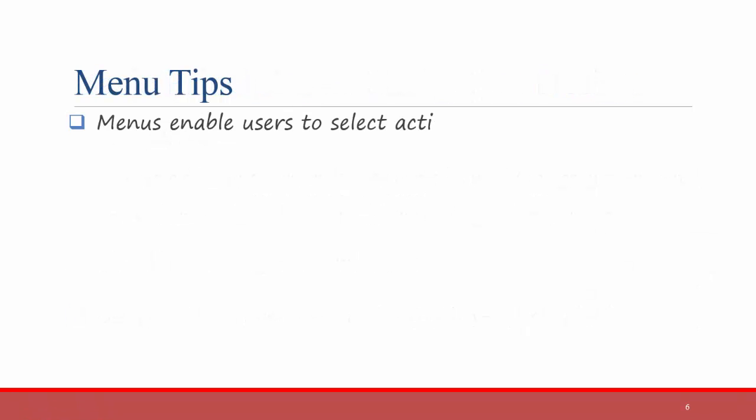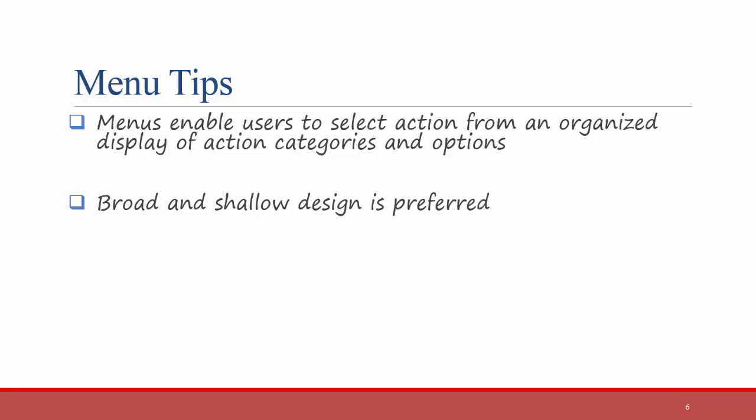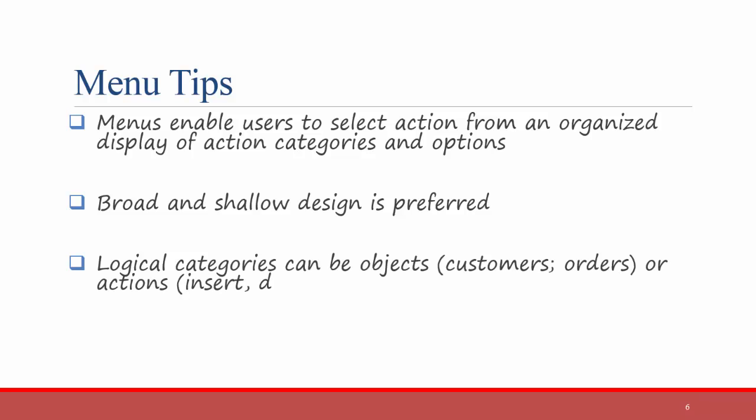Here are some tips for creating menus that are easy to navigate. Menus enable users to select an action from an organized display of categories and options. Broad and shallow design is preferred over narrow and deep — it's better to have a menu with a lot of options on it and not a lot of submenus that go several levels deep. Avoid submenus within submenus within submenus. Use logical categories that will make sense to the users, for example customers and orders, or actions like insert and design.